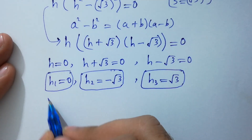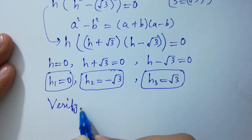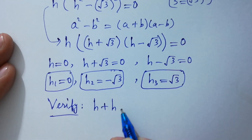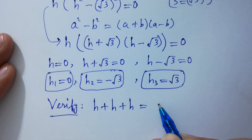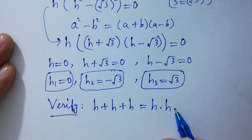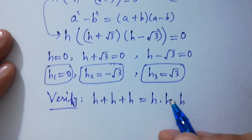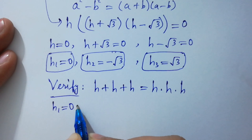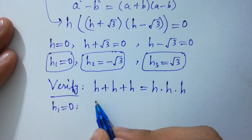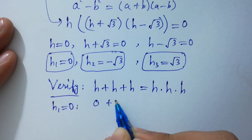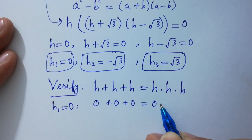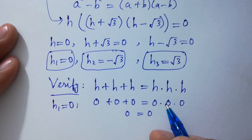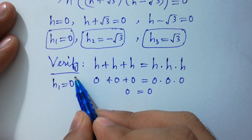Now verify. For h plus h plus h equal to h times h times h, first put the value h equal to 0. We have 0 plus 0 plus 0 equal to 0 times 0 times 0, giving 0 equal to 0. This shows that h₁ equal to 0 is correct.